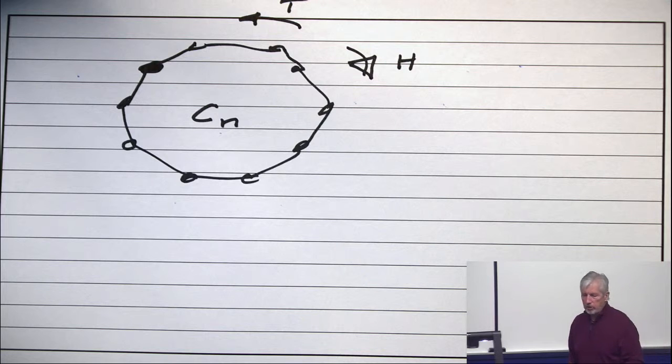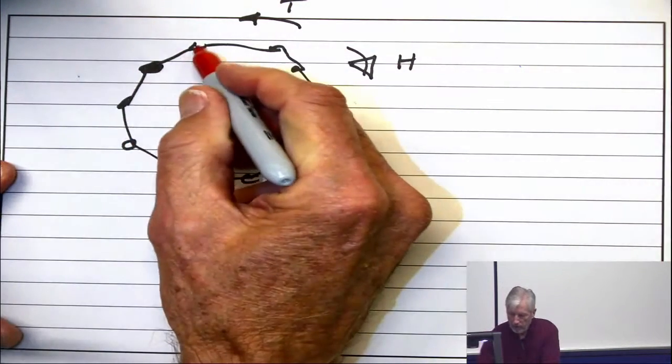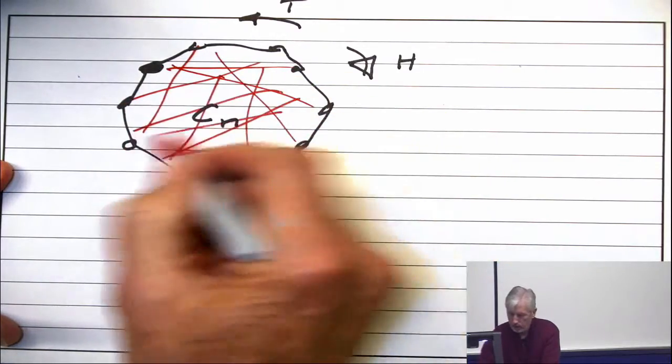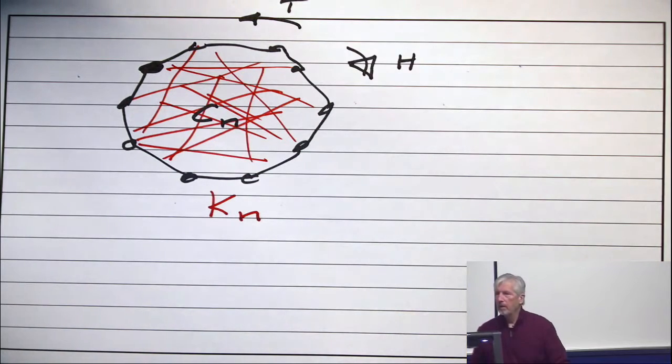Now, let's change the graph. Let's make the graph the complete graph. Put in all the edges. Turn it into a KN.